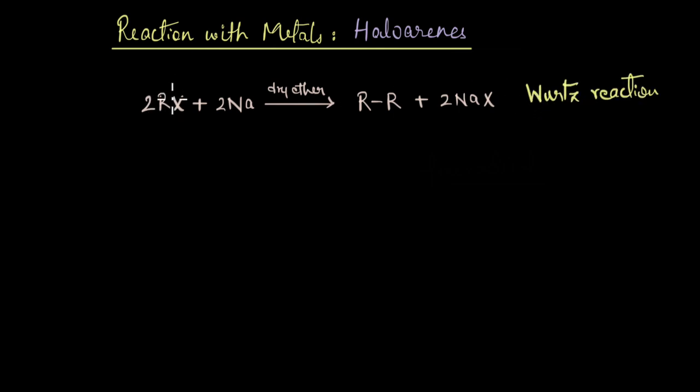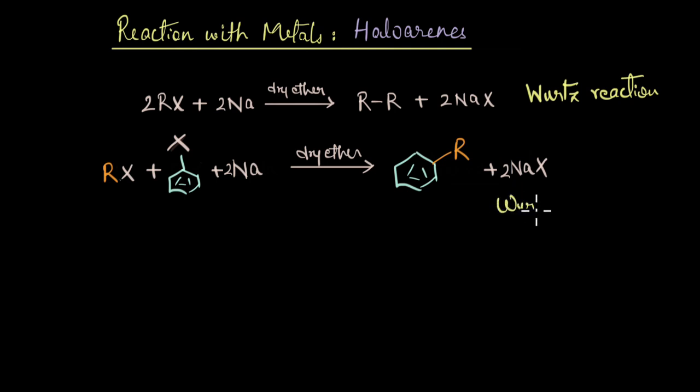Now if you replace one of the alkyl halides with an aryl halide, in that case we get the product which is an alkyl arene, and this reaction is called Wurtz-Fittig reaction. Here you have a new C-C bond that is being formed between the alkyl group of the haloalkane and the phenyl group of the haloarene.